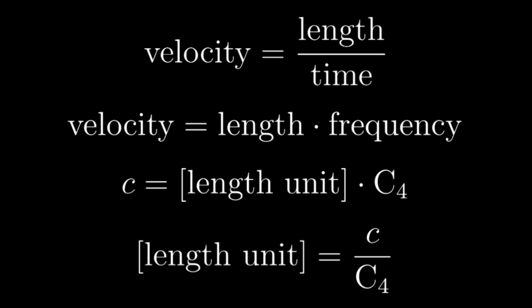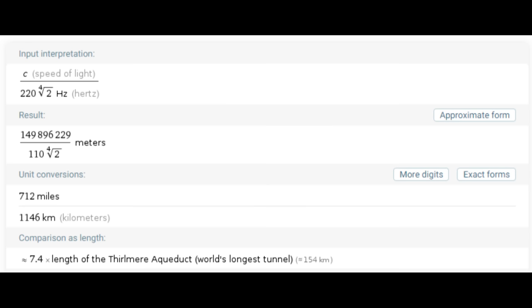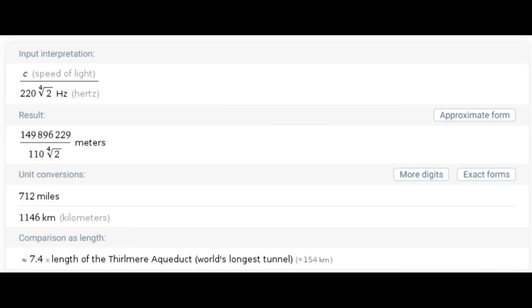Using middle C as our standard unit of frequency and the speed of light as our standard unit of velocity, we can generate a unit of length, speed of light per middle C. Once again, the speed of light is very fast, and middle C is like a middle frequency, so a speed of light per middle C is a very long distance, equal to around 1.146 million meters, or like 712 miles.